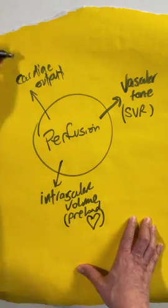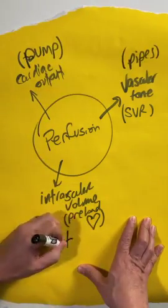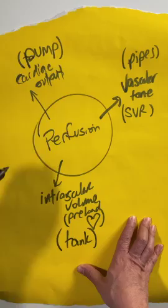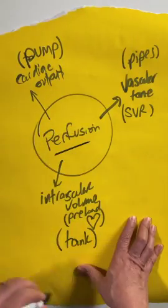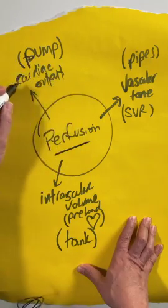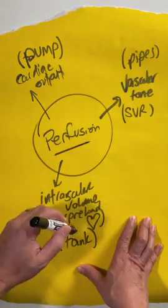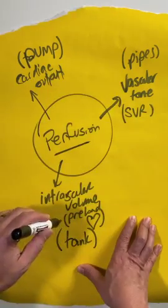A simpler way of thinking of this is the pump, the pipes, and the tank. All three things here—the pump, the pipes, and the tank—together make up tissue perfusion. If you have shock, you typically have a loss of one or more of these three things.